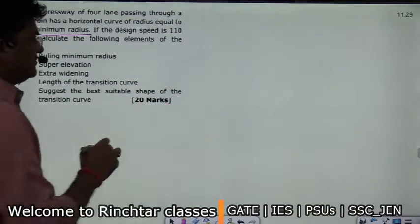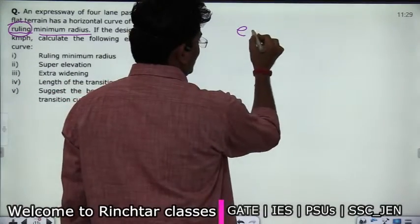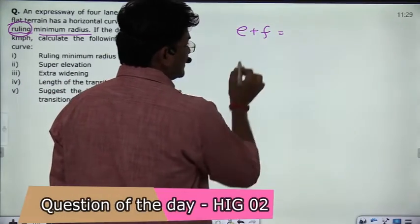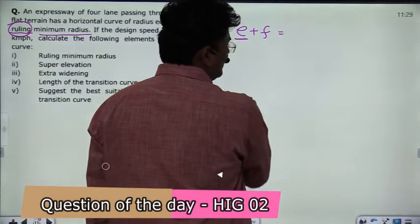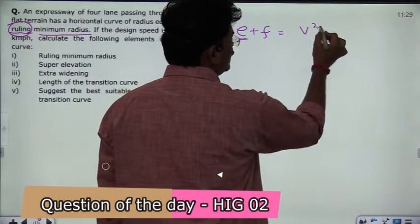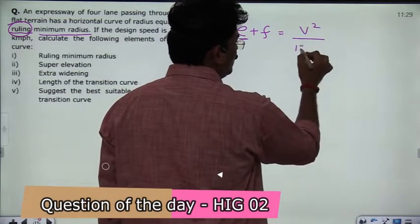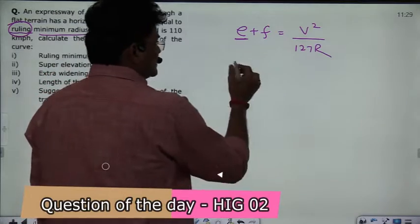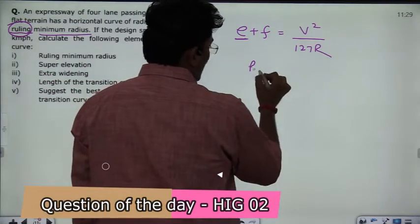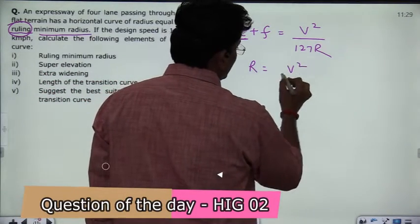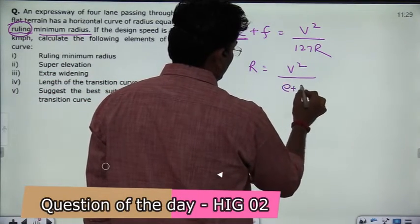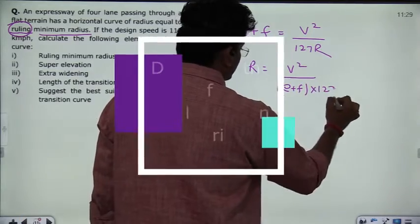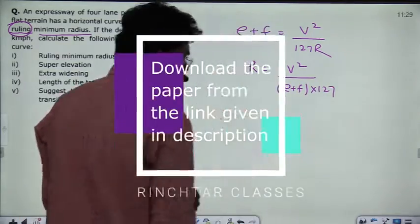When dealing with horizontal curves, the relationship between speed, friction, and super elevation is recalled as V² upon 127R. If you want to solve for R, the formula becomes: R = V² divided by (E + F) multiplied by 127.